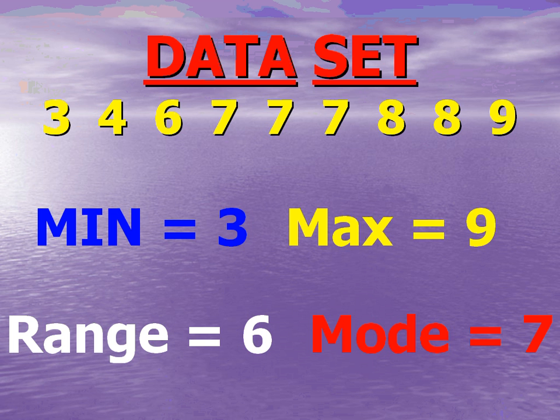A lot of students will point out that there were two eights in the data set as well. But sevens appear more than the eights — there are only two eights and there are three sevens, and that's why seven is the mode. Two other things to notice about the mode: if you have a set of data where no number appears more often than the rest, then there is no mode — you don't write zero, you simply write 'there is no mode.' Also, you can sometimes have more than one mode. In this data set, if there was another eight, you'd have three sevens and three eights, so the modes would be seven and eight.